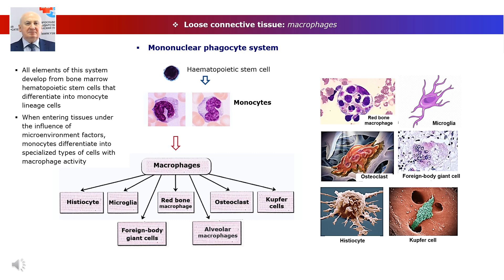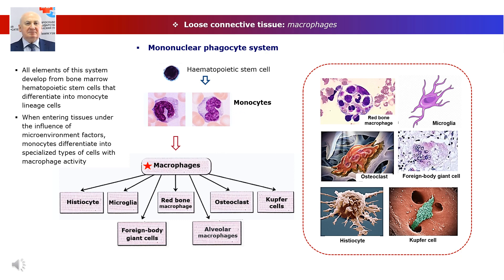The main phagocytic elements of connective tissues are macrophages, which are part of the specialized defense system of the body known as the mononuclear phagocyte system. All elements of this system develop from bone marrow hematopoietic stem cells that differentiate into monocyte lineage cells. When entering tissues under the influence of microenvironment factors, monocytes differentiate into specialized types of cells with macrophage activity. The key peripheral elements of this system include macrophages of loose connective tissue, and macrophages of bone and cartilage tissues.